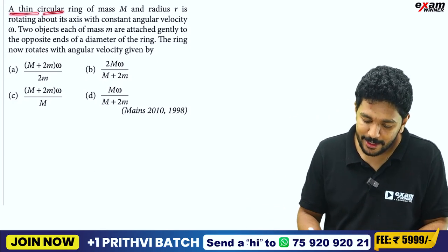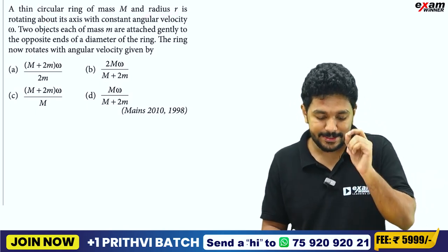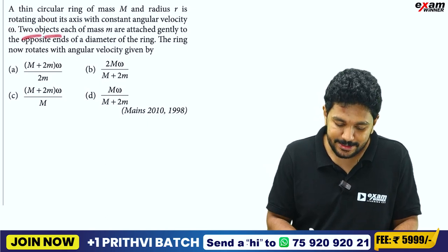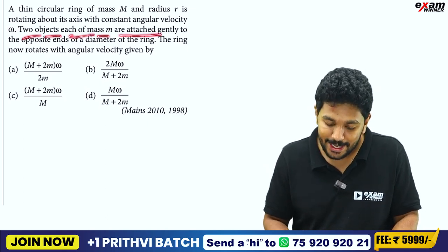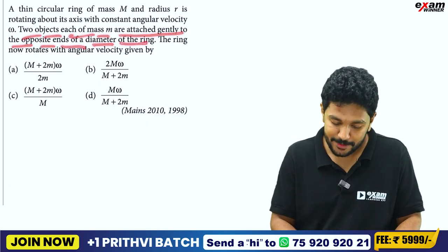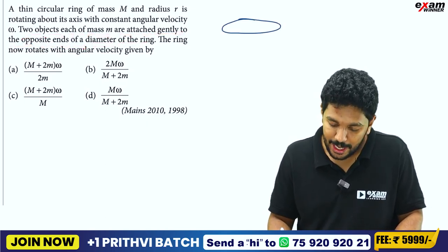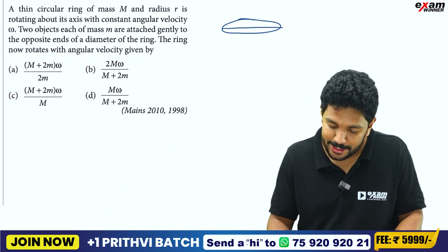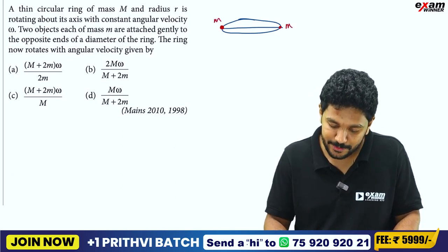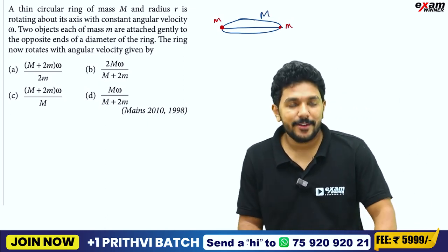A thin circular ring of mass capital M and radius small r is rotating about its axis with constant angular velocity omega. Two objects each of mass M are attached gently to the opposite ends of a diameter of the ring. The ring now rotates with angular velocity...